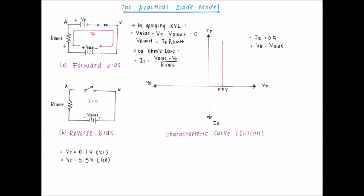The forward current can be determined by Ohm's law from the circuit figure. In the practical model, forward bias is equivalent to a closed switch in series with a small voltage source equal to the barrier potential of 0.7V. Reverse bias acts as an open circuit, the same as the ideal diode model, since barrier potential does not affect reverse bias.